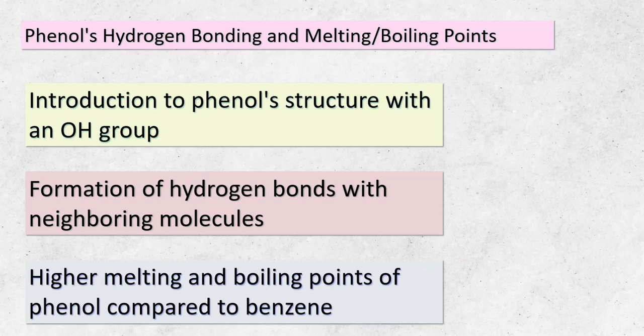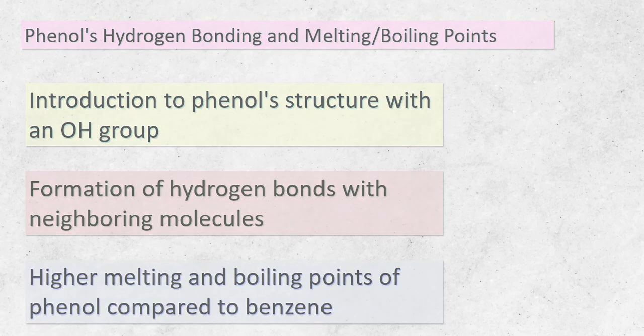On Topic 4, we're exploring hydrogen bonding and its impact on melting and boiling points. Phenol is our star today, featuring an OH group attached to its benzene ring. This OH group is a hydrogen bonding powerhouse — hydrogen bonds form between the OH groups of phenol molecules and neighboring molecules. These bonds create strong intermolecular attractions, leading to higher melting and boiling points compared to plain benzene. The presence of hydrogen bonds can significantly alter a substance's properties.